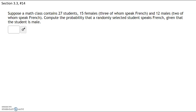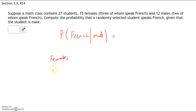New problem: a math class contains 27 students — 15 females, three of whom speak French, and 12 males, two of whom speak French. Compute the probability that a randomly selected student speaks French, given that the student is a male. We always start with the given. Let's make a table with females and males, and whether they speak French or don't speak French.